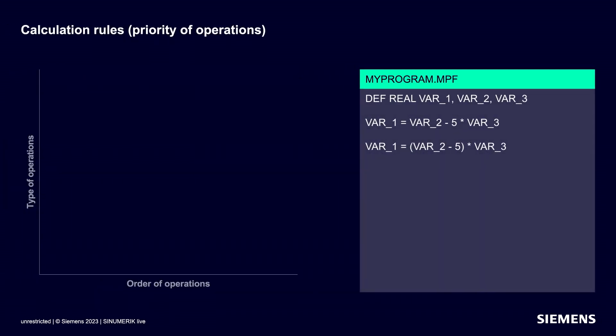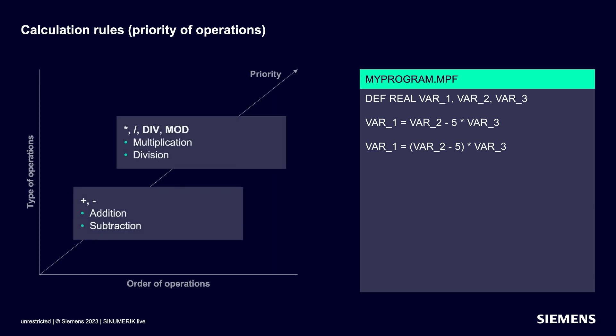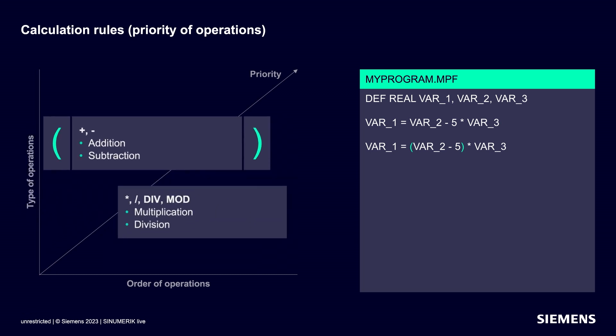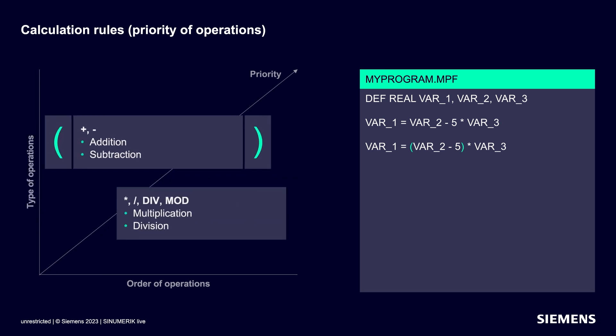Let's look at the arithmetic rules first. The arithmetic rules define the priorities in the arithmetic operations. As is usual in mathematics, multiplication and division before addition and subtraction also applies to CINEMERIC, and otherwise quite simply from left to right. If this order has to be overridden, we'll just use parentheses, as is common in mathematics. By placing parentheses, the original precedence rule can be overridden.